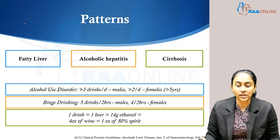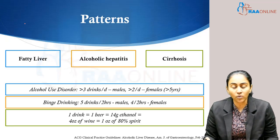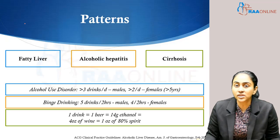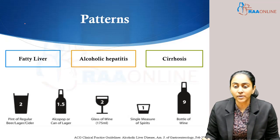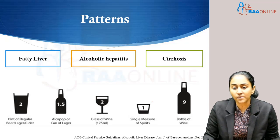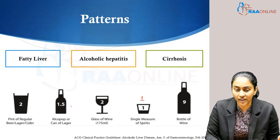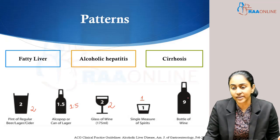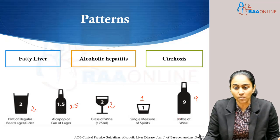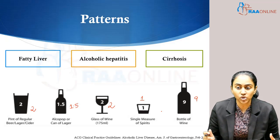One drink essentially corresponds to one glass of beer, which is 14 grams of ethanol, which is equal to 4 ounces of wine, which is in turn equal to 1 ounce of 80% spirit. One single measure of spirit is equal to 1.5 measures of lager, and this is equal to two measures each of beer, cider, or a glass of wine, with 9 measures in a bottle of wine.